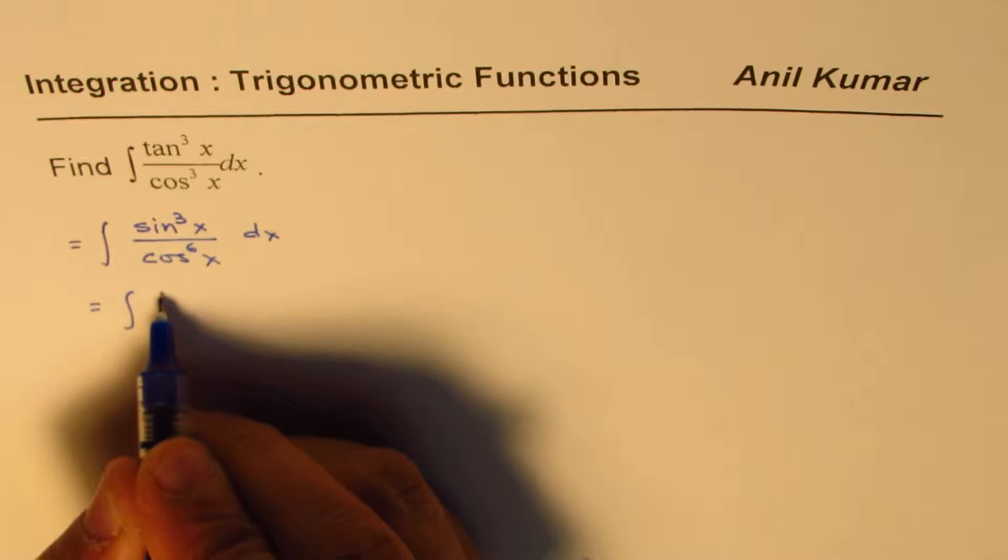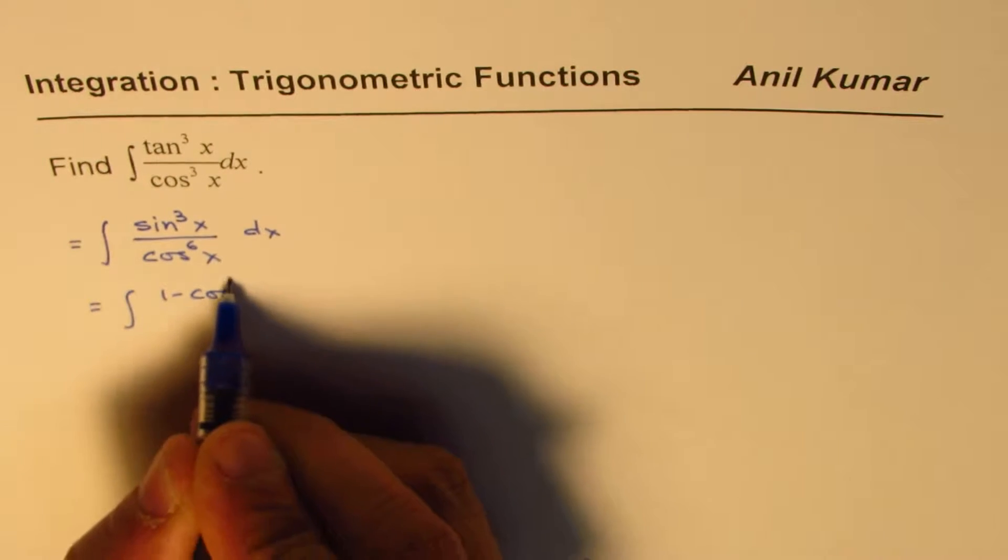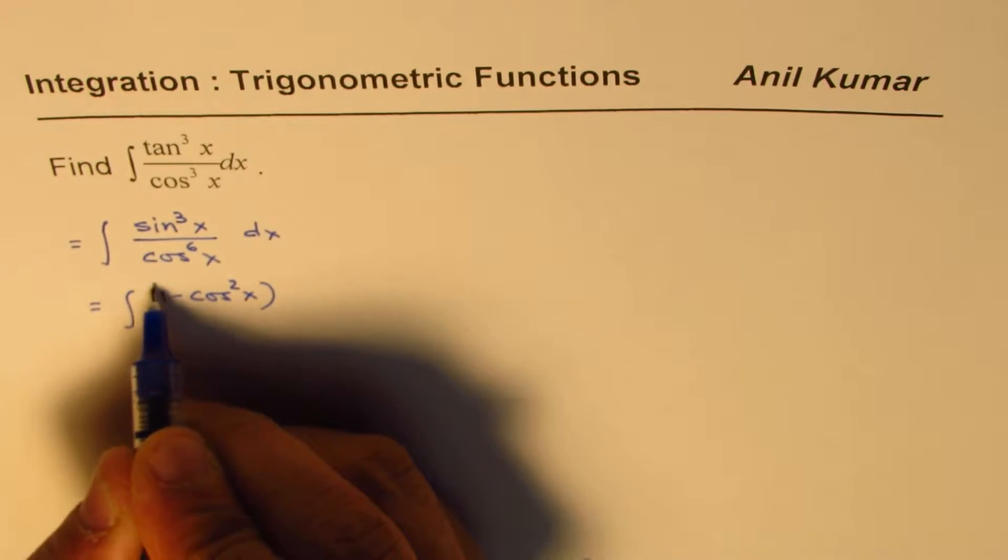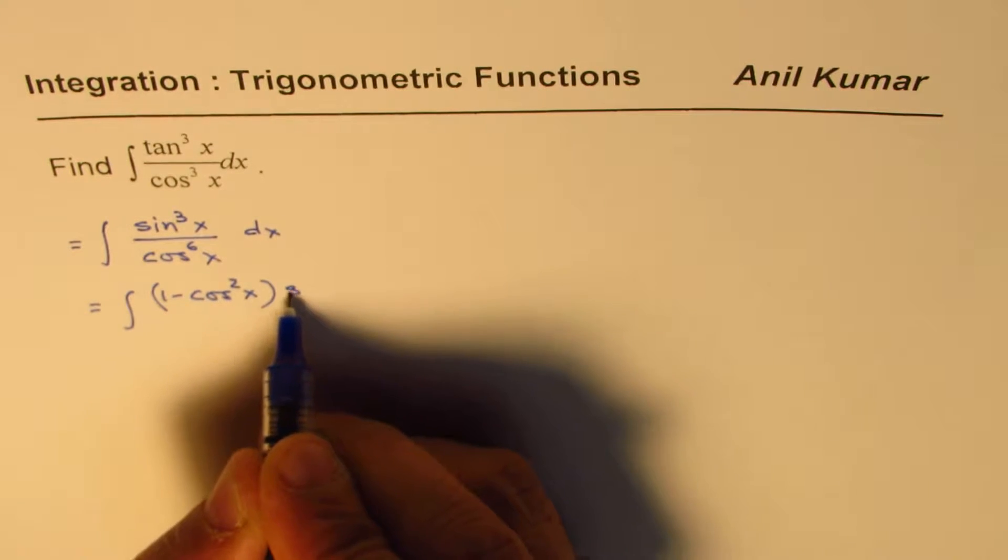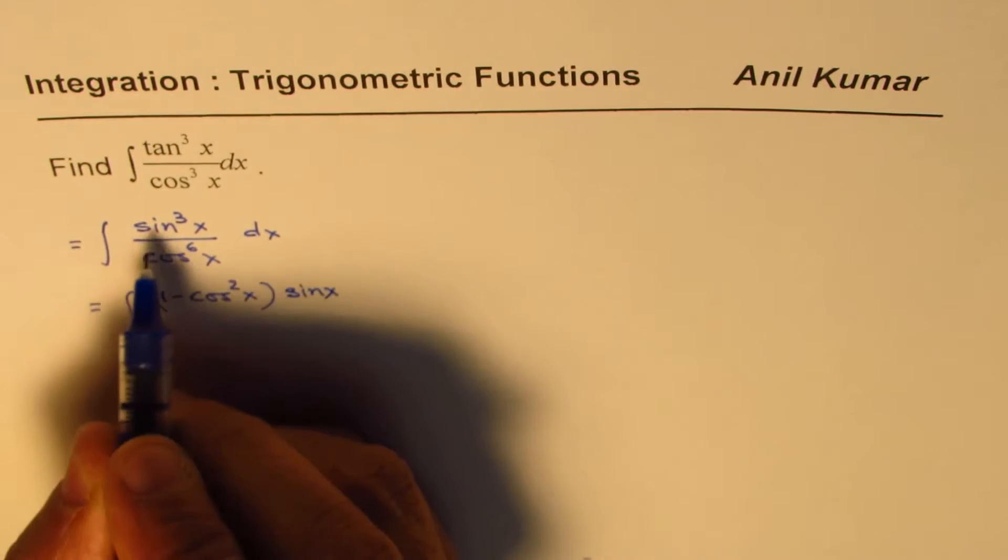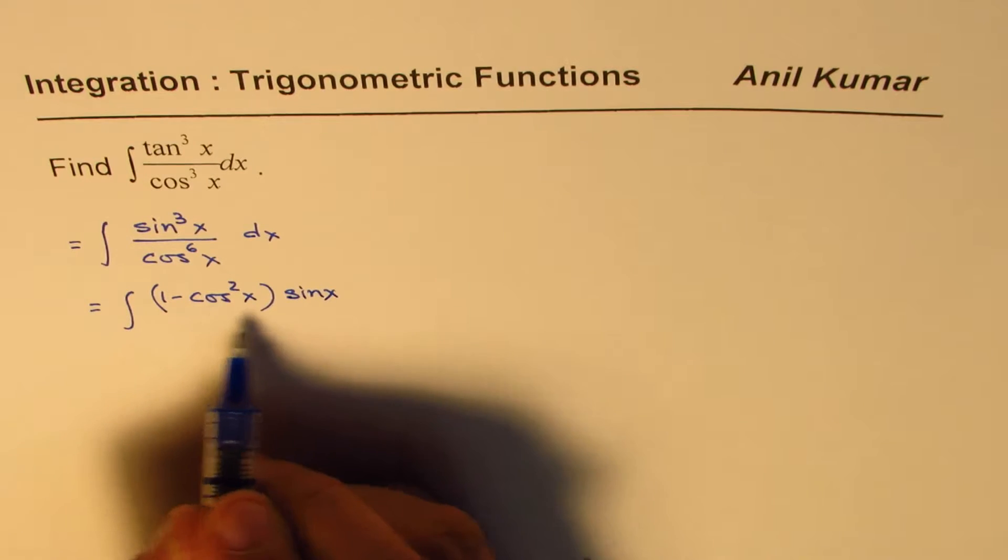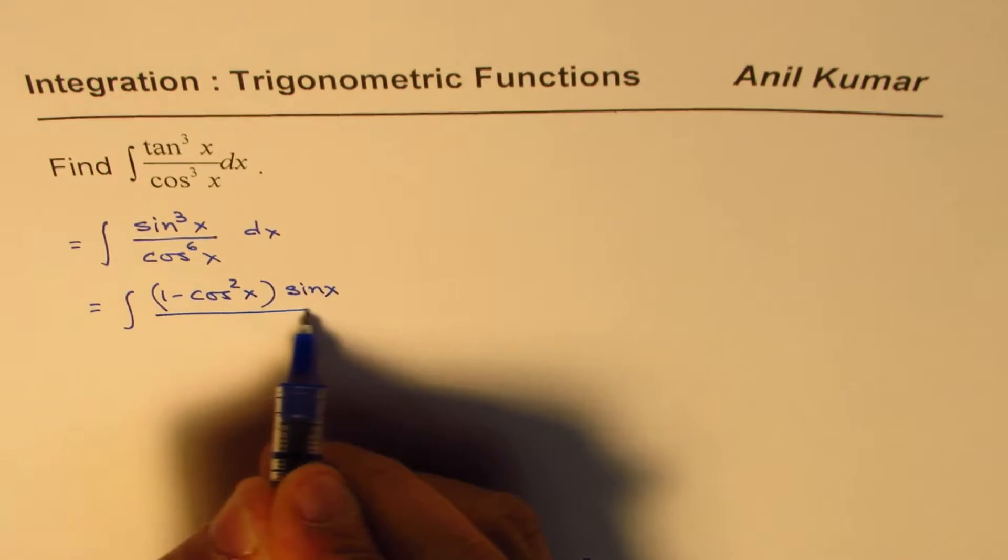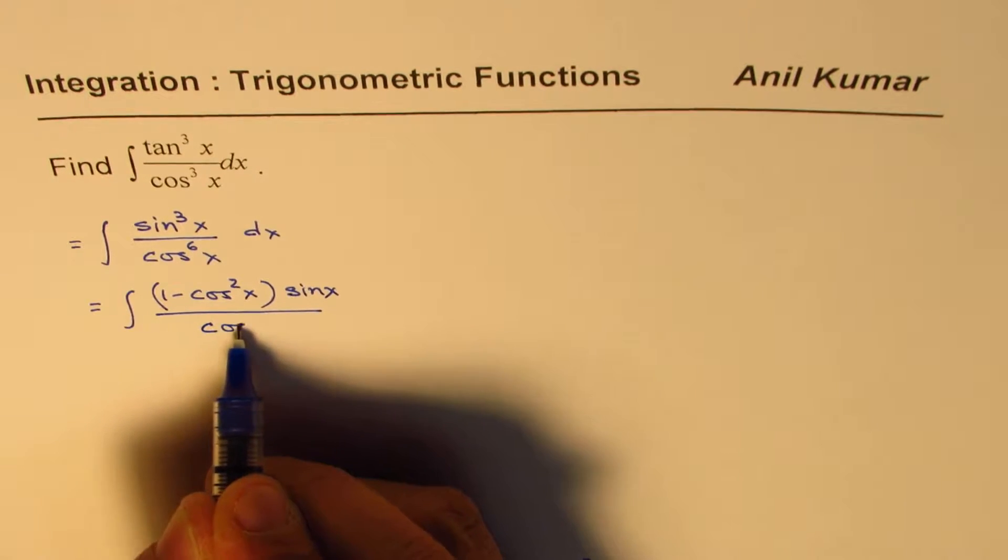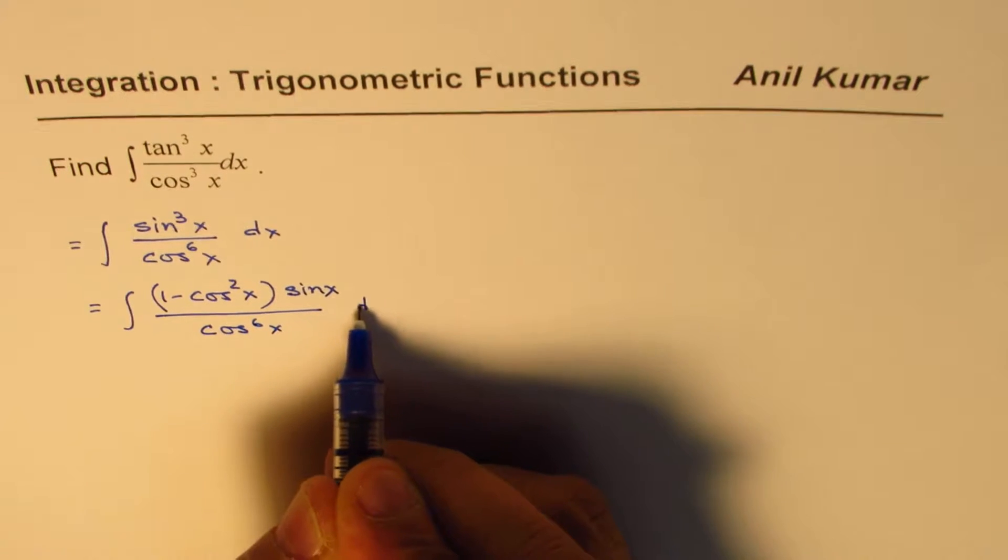since cos cube and cos cube will become cos to the power of 6x. And now we can write sine cube x as 1 minus cos square x times sine x. So I wrote sine square x as 1 minus cos square x, and then we have cos of 6x dx.